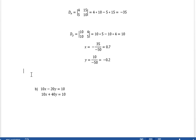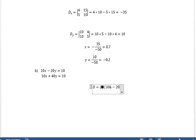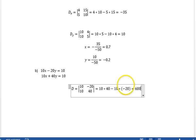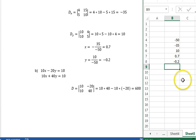Now on to the second set. We do exactly the same thing. We have D equals matrix 10, minus 20, and then 10 and 40, equals 10 times 40 minus 10 times minus 20. That's 400 plus 200, is 600. Equals 10 times 40 plus 10 times 20 equals 600.